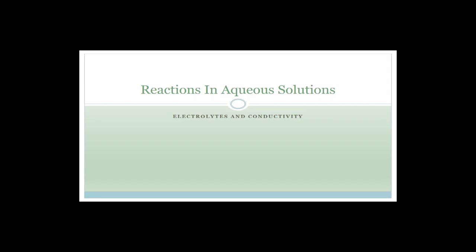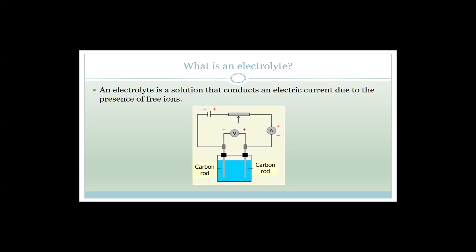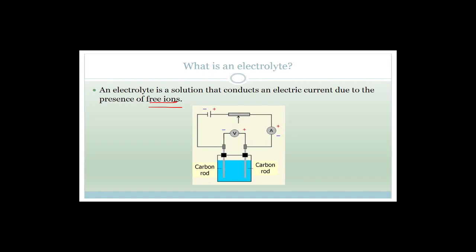Now let's talk about electrolytes and conductivity. An electrolyte is a solution that conducts an electric current due to the presence of free ions — and that is incredibly important. Grade 10s, there are no electrons flowing in the water; there are only free ions. If you say it allows the flow of electricity due to free electrons, you will get it totally wrong. An electrolyte is a solution that conducts an electric current due to the presence of free ions.